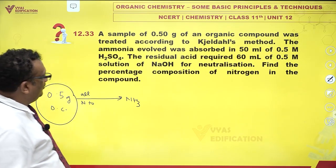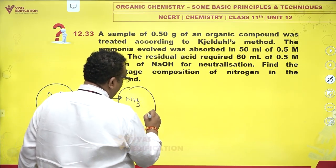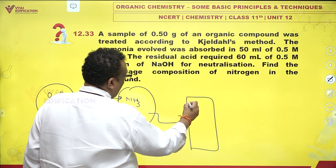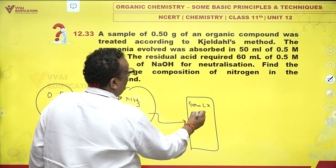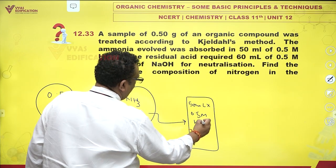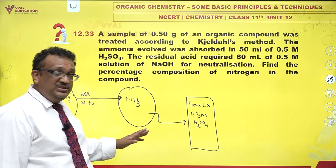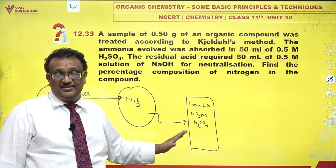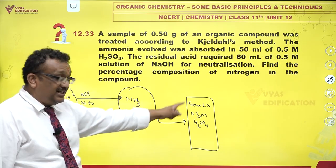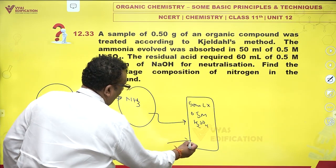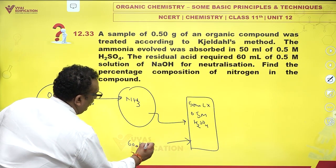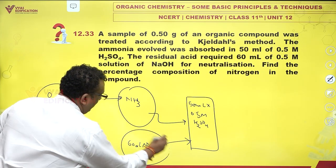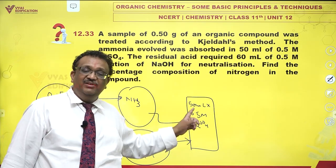This ammonia which was evolved was absorbed in 50 mL of 0.5 molar H2SO4. The ammonia totally reacts with the sulfuric acid, which is usually in excess. The residual acid — there is extra acid which remains — and that required 60 mL of 0.5 molar NaOH for neutralization. So two bases together are neutralizing this acid.